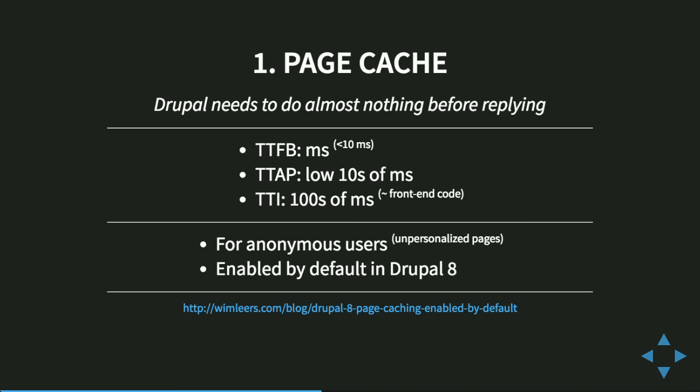With the page cache, Drupal needs to do almost nothing before replying. We usually have time to first byte smaller than 10 milliseconds — obviously there's always network latency. Because we are sending this whole chunk directly, the browser can immediately start fetching assets as well. Depending on your front-end code and how much JavaScript you have, the time to interact can be hundreds of milliseconds or less. In Drupal 8, for anonymous users there's no JavaScript on the page, so the time to interact is much faster. With CSS3 animations, it can be very worthwhile to try a no-JavaScript site for some pages.